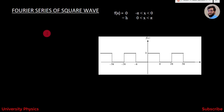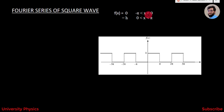Assalamualaikum friends, today we will learn about the Fourier series of square waves. It can be defined as: f(x) = 0 for -π < x < 0, and f(x) = h (some constant) for 0 < x < π.